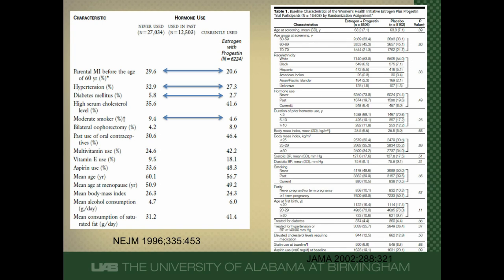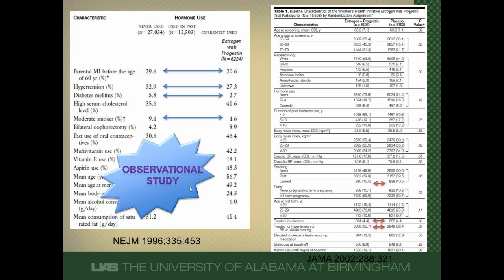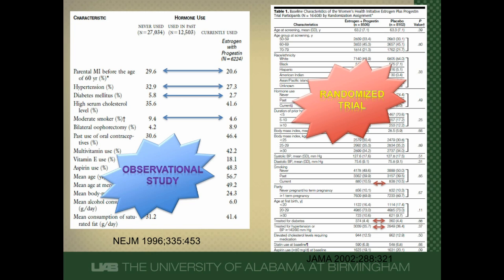On the right is the Women's Health Initiative, a randomized controlled trial that tried to answer the same question: whether hormone replacement therapy was better than nothing in preventing cardiovascular disease. With red arrows showing those similar risk factors, you can see that the percentages of patients with these factors in each arm were equal — just as many women were smokers in both arms, just as many had diabetes, just as many had hypertension. This observational study had an imbalance in prognostic factors, whereas this randomized trial resulted in a balance of those prognostic factors.